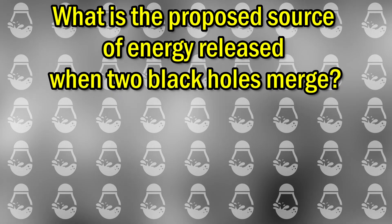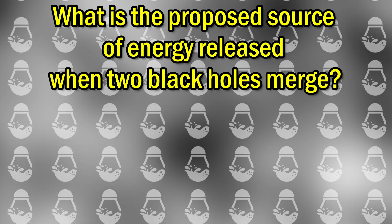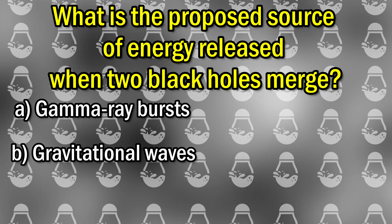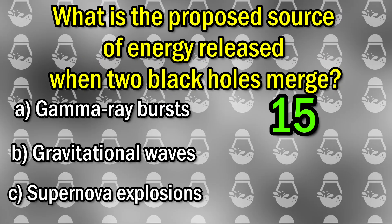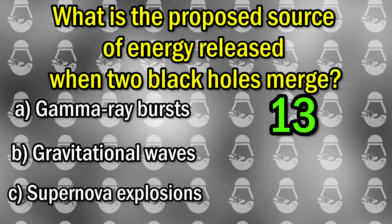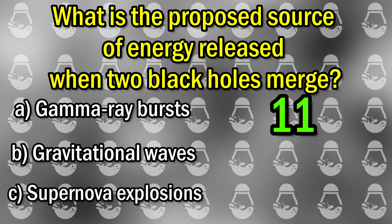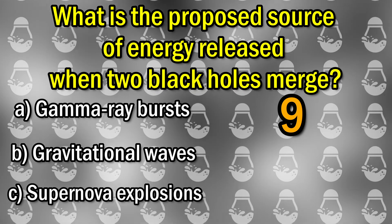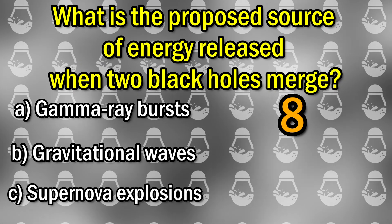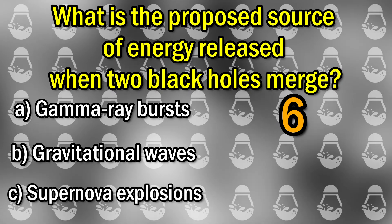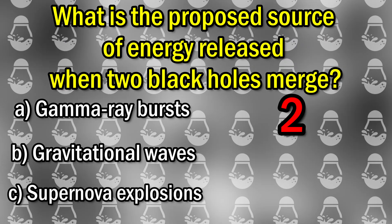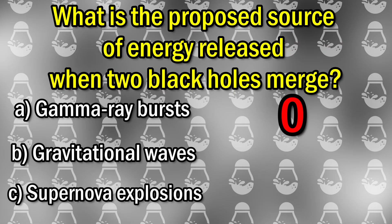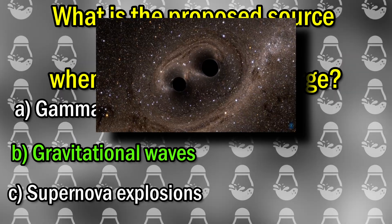Next question. What is the proposed source of energy released when two black holes merge? A: gamma ray bursts. B: gravitational waves. C: supernova explosions. The correct answer is B: gravitational waves.